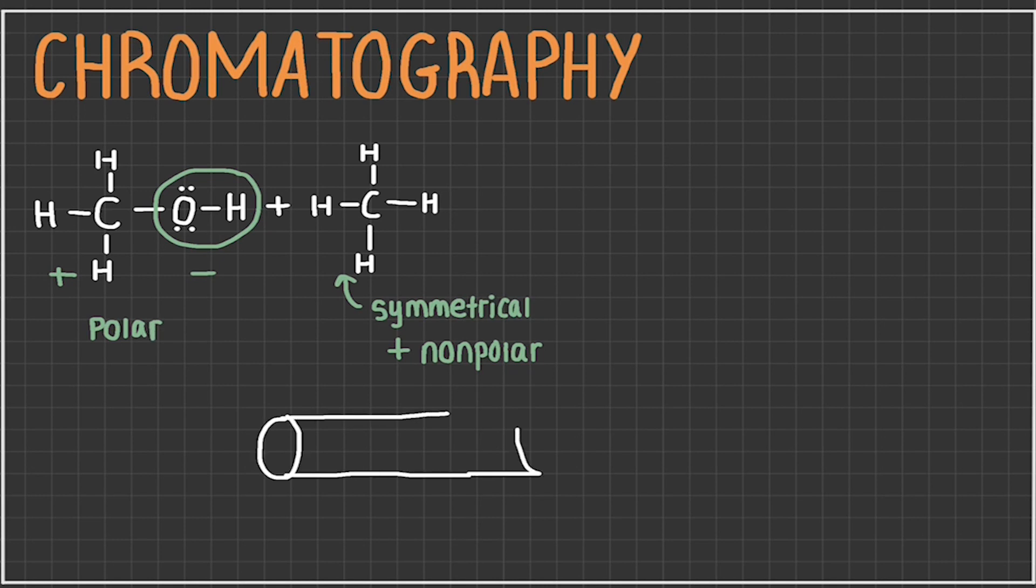Essentially, it is polar. Now let's say we line the column with a nonpolar material. This is called the stationary phase, because the substance that is most attracted to it will begin to slow down or even come to a complete stop as it moves through the column.